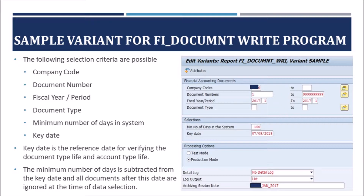Along with the above selection criteria, we can see the common components in the variant screen. Under processing options, we selected production mode, no detailed log, log output to spool list, and an archiving note. After filling all required fields, maintain the attributes for this variant and save it. Note that the variant screen differs for each archiving object depending on the required parameters for the respective write program.